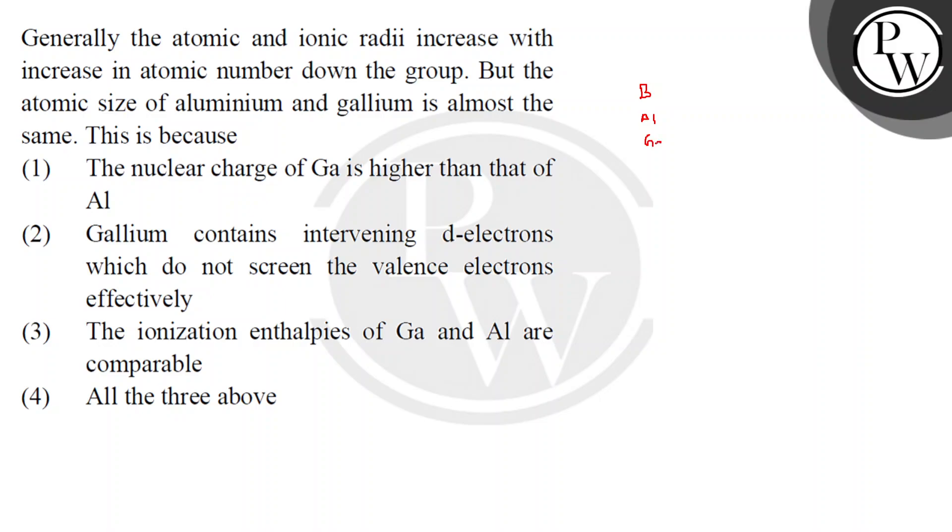Boron, Aluminium, Gallium, Indium and Thallium. So generally what happens if we move down the group? We increase the size. But for Aluminium and Gallium, what is the size of Aluminium and Gallium? What is the reason?